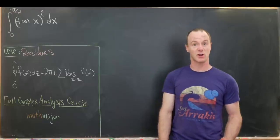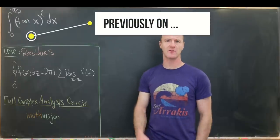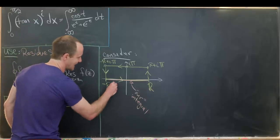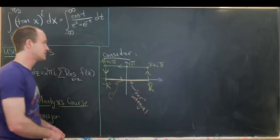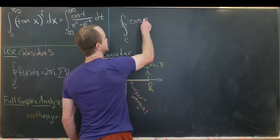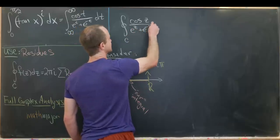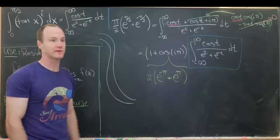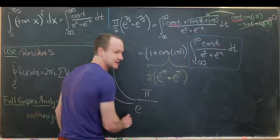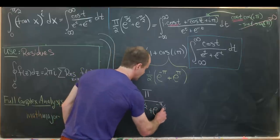Today I've got a nice integral that we're going to solve using complex analytic methods. We'll name this entire thing C — the integral over this curve C of cos(z) over e^z plus e^(-z) dz. Solving for our goal integral gives us π over e^(π/2) plus e^(-π/2).